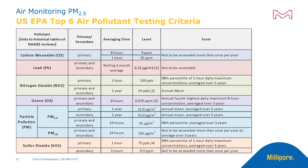This table further outlines the top six pollutants and their testing criteria. It denotes their primary and secondary status, the collection averaging time, the upper limit for permitted levels, and the testing concentration maximum.